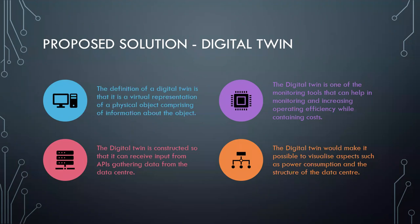The digital twin will make it possible to visualize aspects such as power consumption — that's energy — and the structure of the data center, that is the different VMs and hypervisors, which are servers. Our digital twin is a bi-directional digital twin, which means that it gets data from the API, but we can also manipulate the data, thereby manipulating the real-world data center.